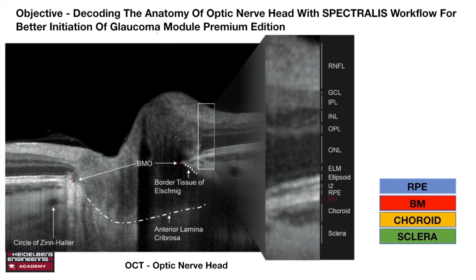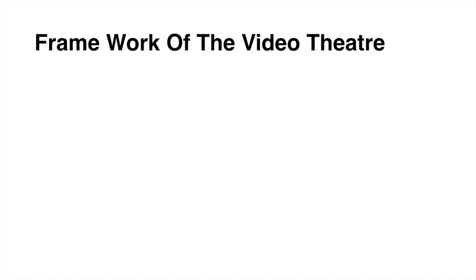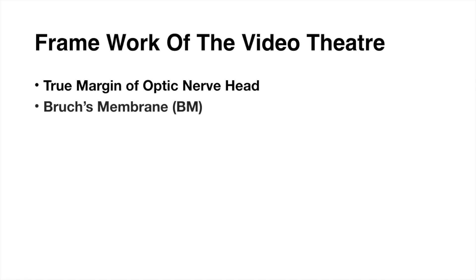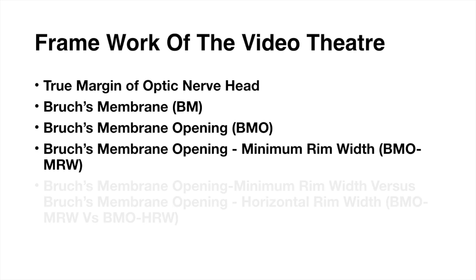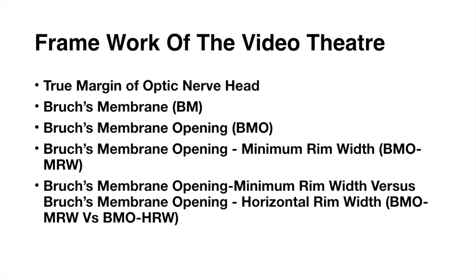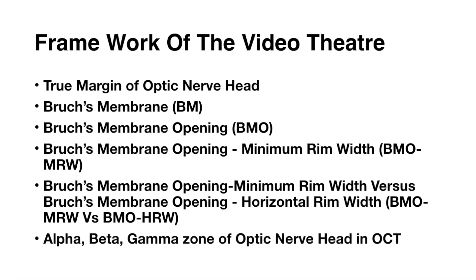RPE is over Bruch's membrane; Bruch's membrane is over the choroid; choroid is over the sclera. The framework of this video theater involves: what is the true margin of the optic nerve, what is Bruch's membrane, what is Bruch's membrane opening, what is Bruch's membrane opening minimum rim width, how is it different from Bruch's membrane opening horizontal rim width, and what are the alpha, beta, and gamma zones.